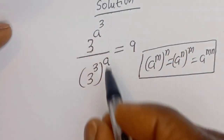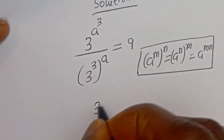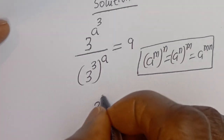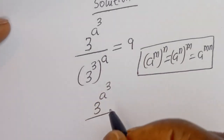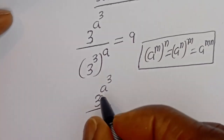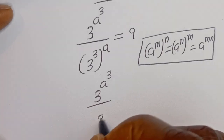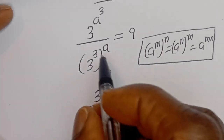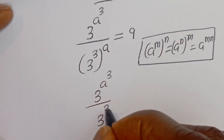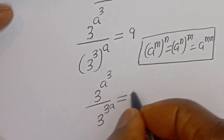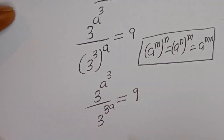Then this can be written as 3 to the power of A to the power of 3, divided by 3 to the power of 3 multiplied by A. This gives 3A, which is equal to 9.